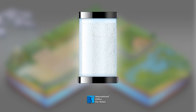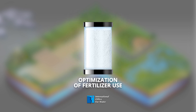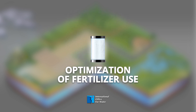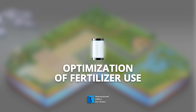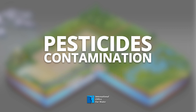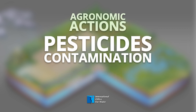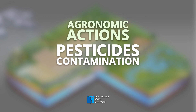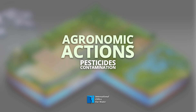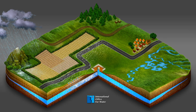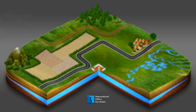Concerning fertilizers, the quantity and duration of the input need to be carefully thought out to optimize utilization. For pesticides, changes in agricultural practices can reduce or even eliminate the need for pesticides and also for fertilizers. The establishment of a grassy strip close to a river can effectively limit their concentration and surface runoff.